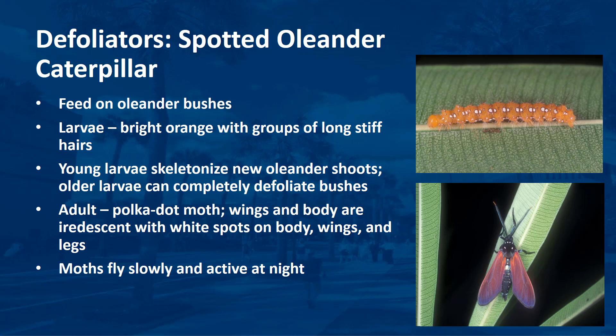Young larvae skeletonize new oleander shoots, which turn light brown. Older larvae can completely defoliate oleander bushes. The adult stage of the oleander caterpillar is sometimes called the polka dot wasp moth. Its wings and body are iridescent, continuously changing between green and blue. The body, wings, legs, and antennae have small white spots on them, and their rear ends are red-orange. The moths fly slowly and are active during daylight.